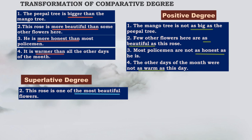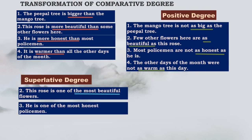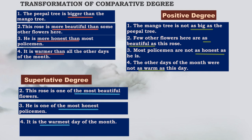Now let us see how to make the superlative. Why didn't we transform the first one — the mango tree and peeple tree — into superlative? Because only two are compared; that is not a comparison of many. For superlative, one must be compared with many. The second one: the rose is compared to other flowers — there are many. 'This rose is one of the most beautiful flowers' — it is 'one of the most' because 'few other flowers' was written, so there are many other beautiful flowers and it is one of them. 'He is one of the most honest policemen.' 'It is the warmest day of the month.'